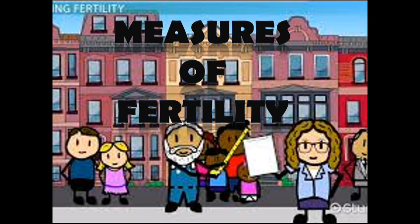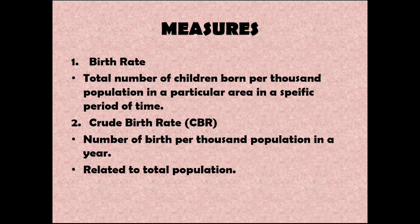Hello everyone, today I'll be talking about the measures of fertility, or the determinants by which we can know the fertility or birth rate of a given area. The first measure is the birth rate, which is the total number of children born per thousand population in a particular area in a specific period of time. This time period is not specified, so birth rate is normally taken per thousand population.